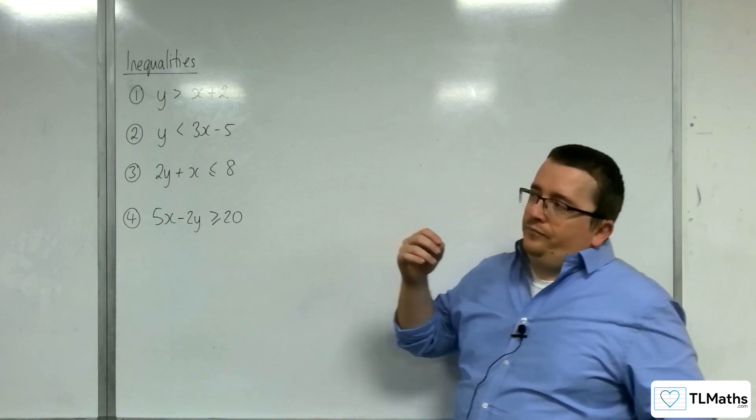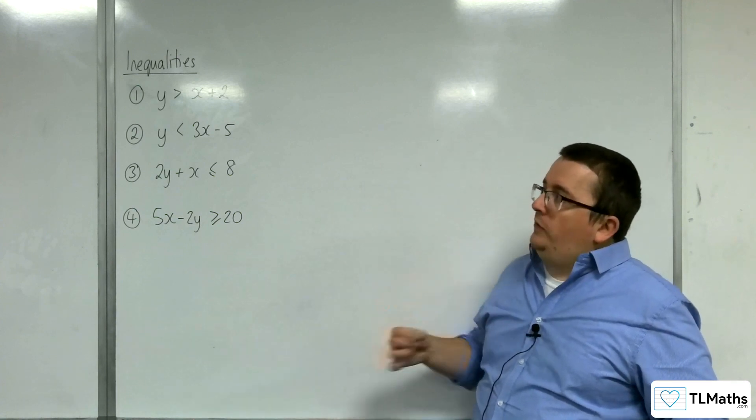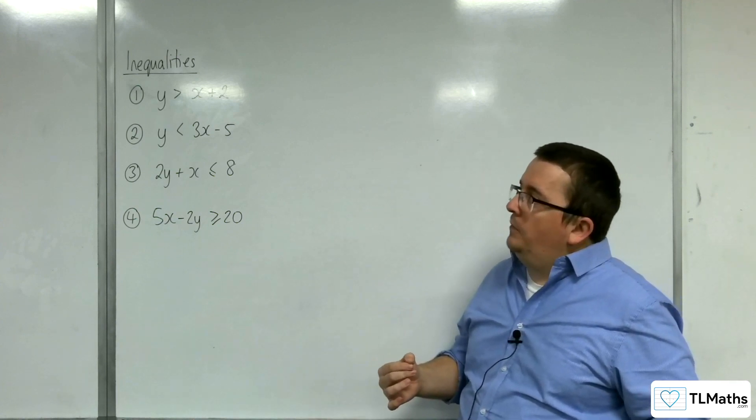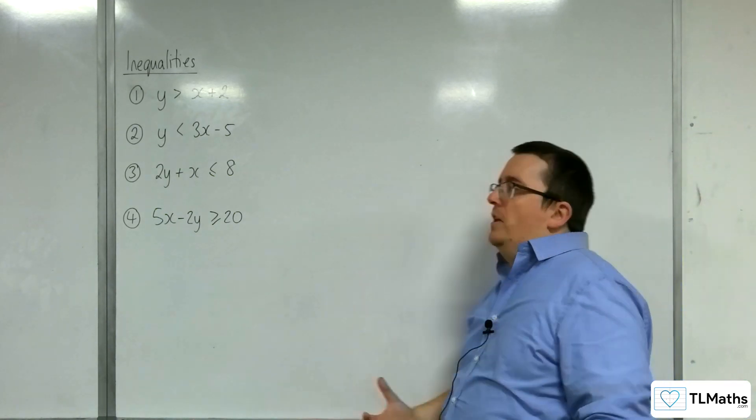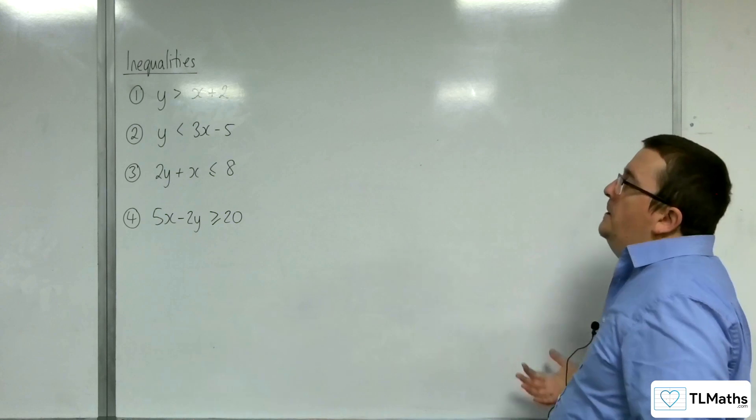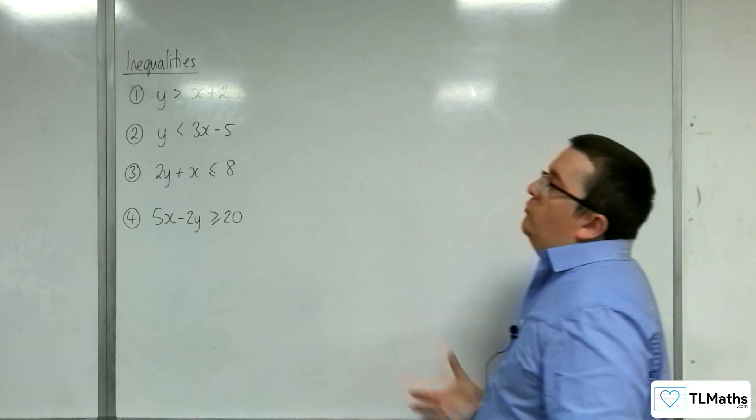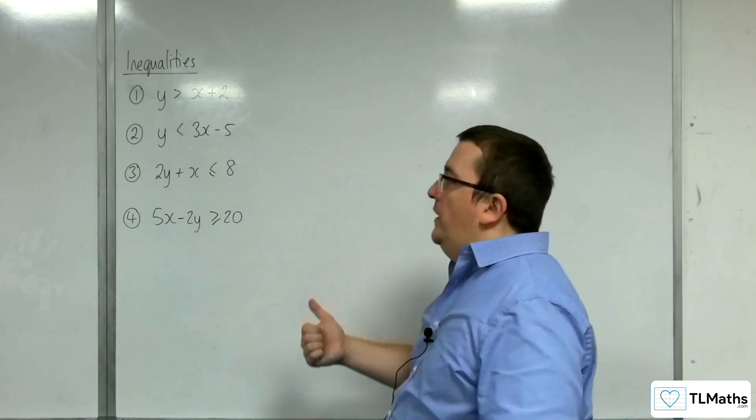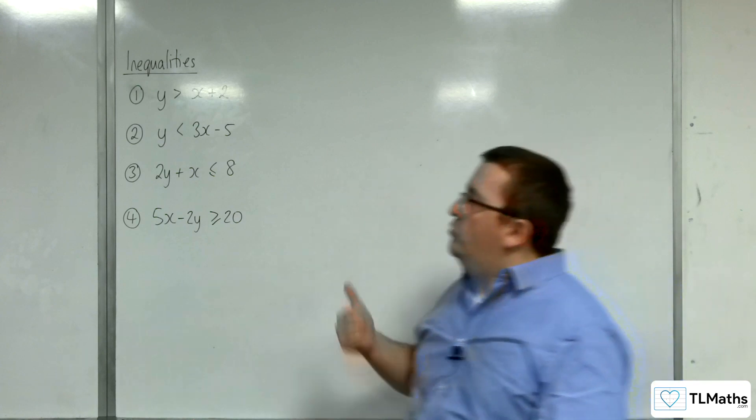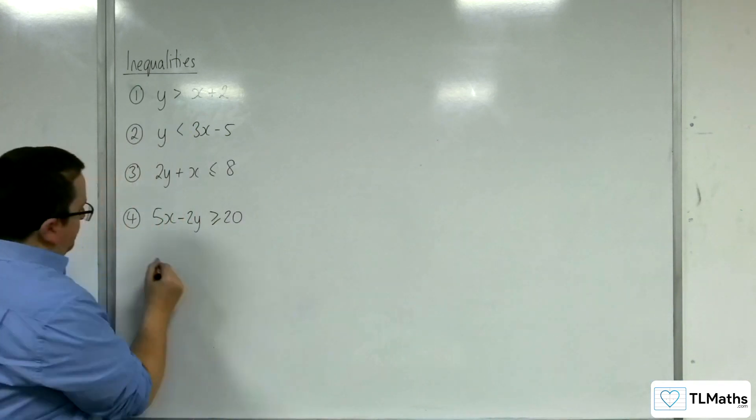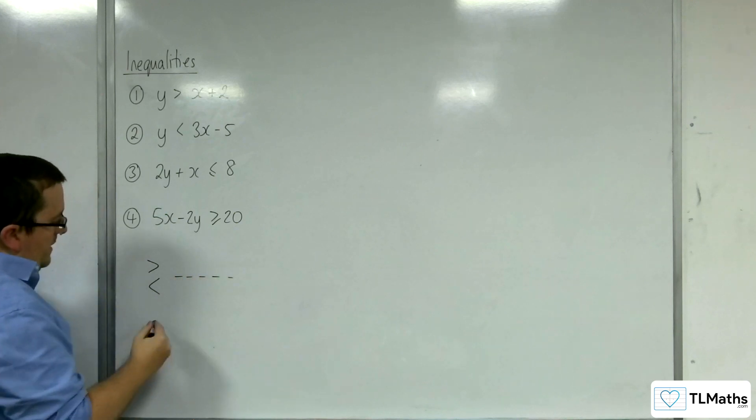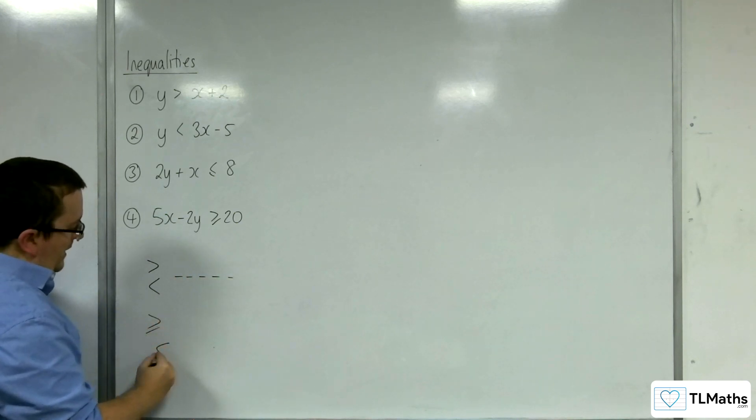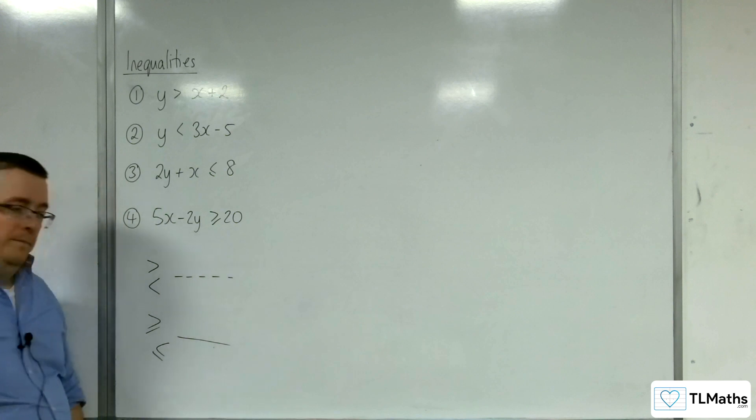So, historically speaking, I'll go through a couple of examples and I'll show you what I mean and how this kind of works out. So, number one, y is greater than x plus 2. First thing to identify is that if you've got a greater than or a less than, then your line will be dotted. And if it's greater than or equal to or less than or equal to, then it'll be a solid line.